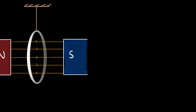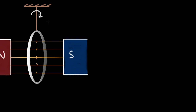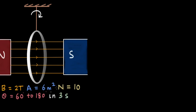In the next example, we have a coil between two poles of a magnet, with field lines going from north to south. The coil can rotate clockwise. The magnetic field strength is 2 Tesla, the area of the coil is 6 square meters, and the coil is made up of 10 loops of wire, so N = 10. This coil rotates from an angle of 60 degrees to 180 degrees in 3 seconds, where theta is the angle between the magnetic field vector and the area vector.